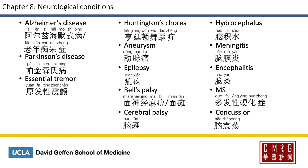Alzheimer's disease is 阿尔茨海默病, or commonly called 老年痴呆症. Parkinson's disease is 帕金森病. Essential tremor is 原发性震颤; essential is 原发性. Huntington's chorea is 亨廷顿舞蹈症. Aneurysm is 动脉瘤. Epilepsy is 癫痫. Bell's palsy is 面神经麻痹 or 面瘫. 面瘫 is a common term for facial paralysis. Cerebral palsy is 脑瘫.